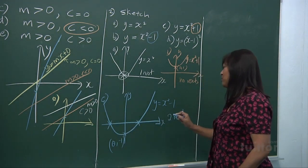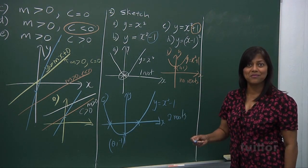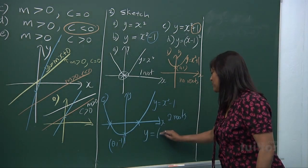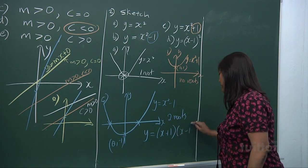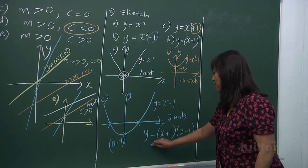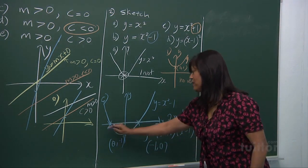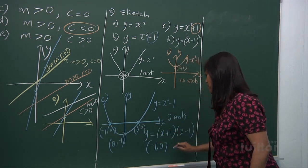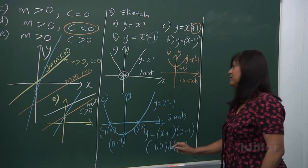What are the two roots for y equals x squared minus 1? We can factorize this graph. x squared minus 1 gives you (x plus 1)(x minus 1). So the roots are, when y equals 0: x is minus 1 (point minus 1, 0) and x is 1 (point 1, 0).